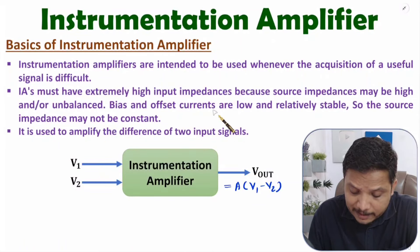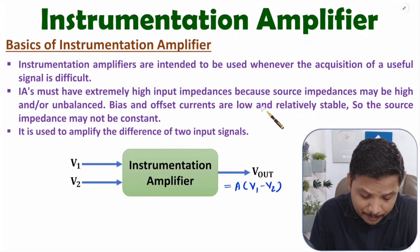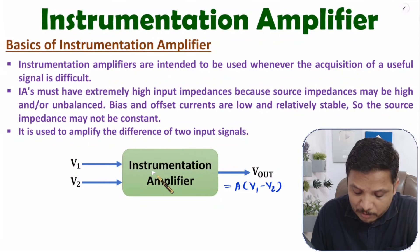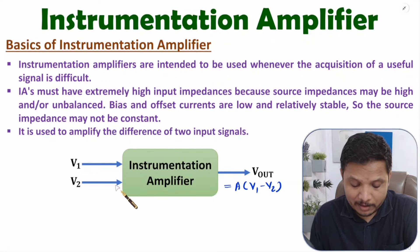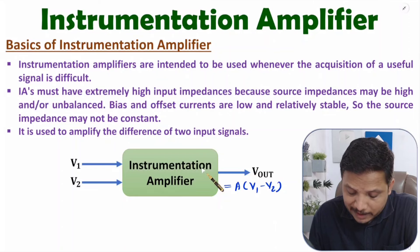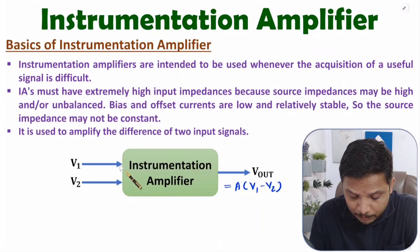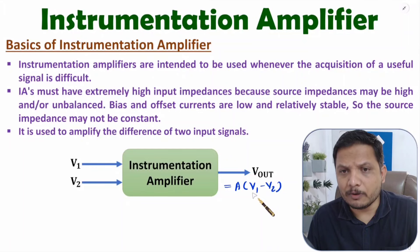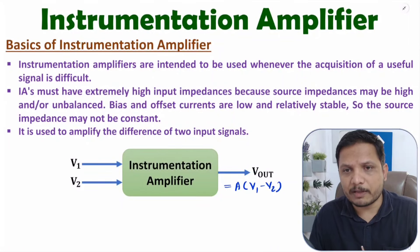Bias and offset currents are low and relatively stable. The source impedance may not be constant, which is the reason why we need an instrumentation amplifier with very high input impedance. It is simply a differential amplifier where the gain is A multiplied by the differential input V1 minus V2. Now I am going to explain the instrumentation amplifier using operational amplifiers.